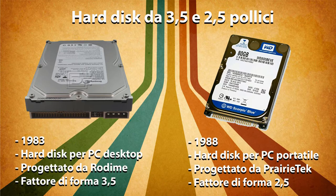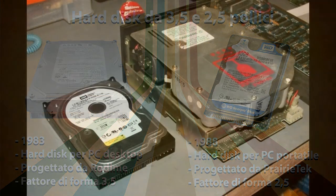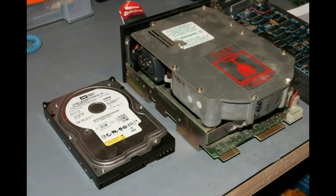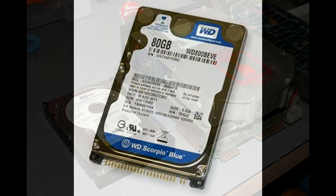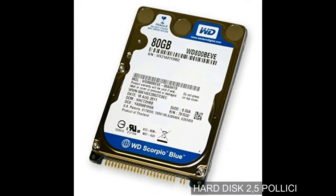Durante gli anni 80 e 90 i produttori di dischi fissi e di PC hanno innovato e cambiato il mercato in maniera importante e definitiva. Le unità da 5,25 pollici hanno presto dato il via alle unità da 3,5 pollici, prodotte da Rodime nel 1983. I nuovi dispositivi avevano le dimensioni di un libro e integravano le più moderne tecnologie, permettendo a dischi più piccoli di archiviare centinaia di megabyte in più. Quando i computer portatili guadagnarono popolarità, fecero la loro comparsa gli hard disk da 2,5 pollici, prodotti da Prairietek nel 1988.